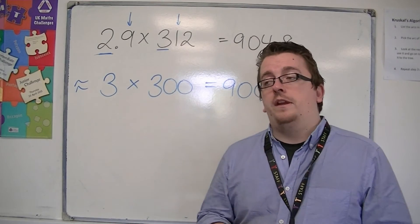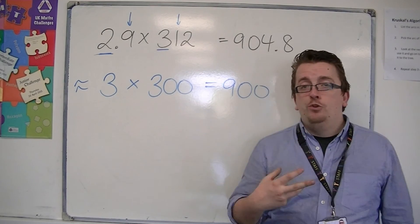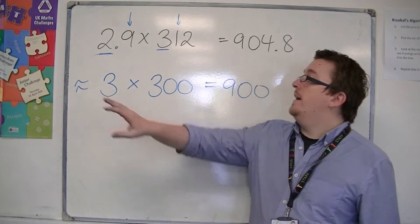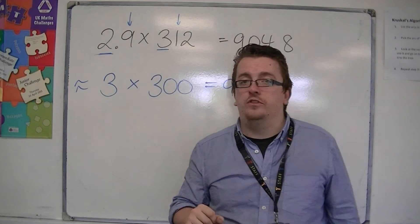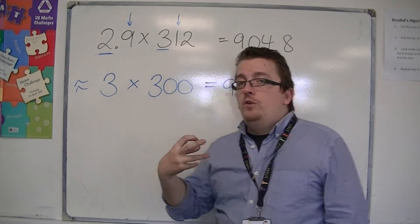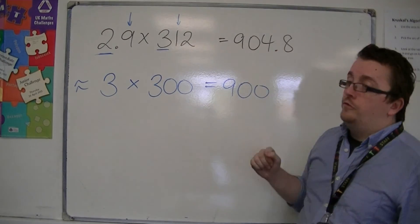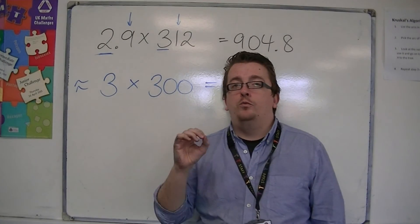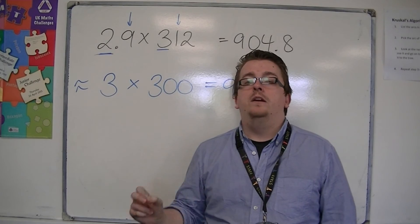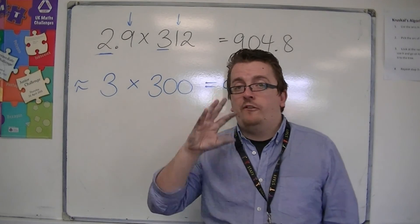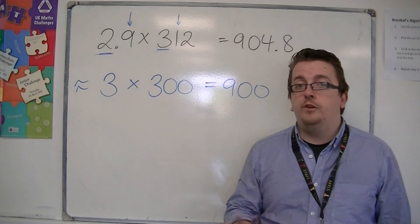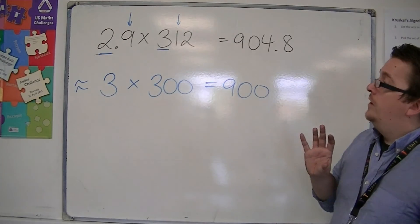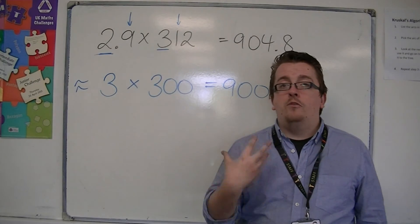Now a word of warning with this: if it tells you specifically estimate 2.9 times 312, if you then gave the answer 904.8, your answer would be wrong. So there is a very specific way of doing this problem, and in the next video I will go through more examples to show you how this can be accomplished.